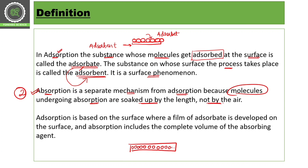In absorption, a film of absorbate is developed on the surface, but absorption includes the complete volume of the absorbing agent. Matlab complete volume mein molecules absorb ho jaate hain — absorb means soak kar lena. Apke molecules ko apke surface mein completely volume mein soak kar liya jaata hai. It is not a surface phenomena — adsorption hi surface phenomena hai. Adsorption is adherence of molecules on the surface, whereas in absorption, molecules usmein sama jaate hain — sirf adhere nahi hote, poore mix ho jaate hain.